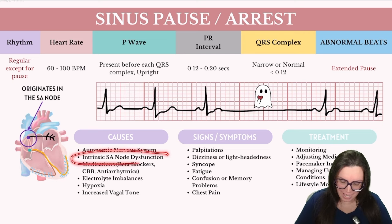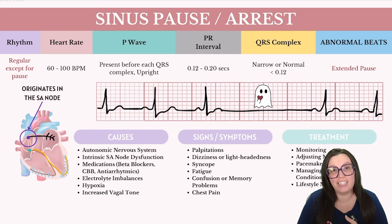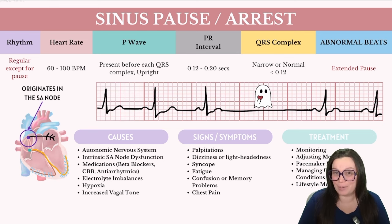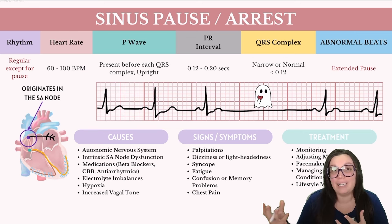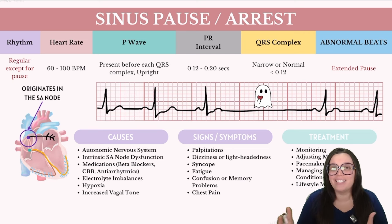When we talk about intrinsic SA node dysfunction, we're talking about the SA node having some kind of intrinsic abnormalities due to aging, ischemic damage, inflammatory conditions, or degenerative diseases that can ultimately affect the generation of regular impulses. Certain medications — particularly those affecting heart rate and rhythm such as beta blockers, calcium channel blockers, and anti-arrhythmics — can suppress the SA node's pacemaker activity. Imbalances of key electrolytes such as potassium and calcium can also impair the electrical activity of the SA node. Other causes can include hypoxia as well as increased vagal tone.